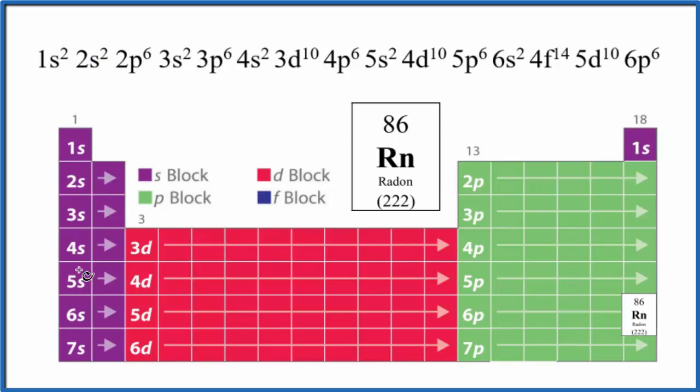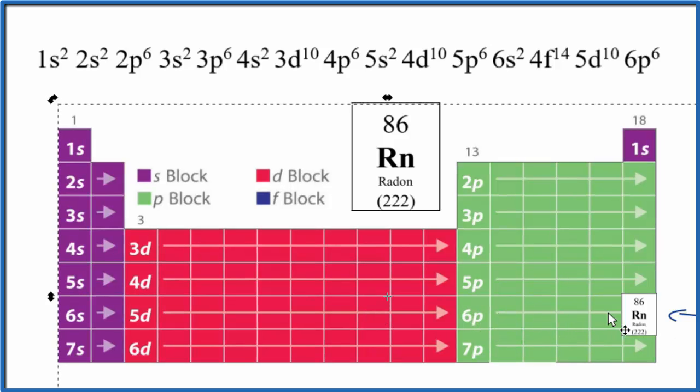First off, I can look at the periodic table divided up into these blocks like the D block or the P block. I can find radon which is right here and because of that I can tell it's going to end in 6p, 1 2 3 4 5 6, so it'll end in 6p6.